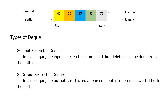Let's see the different types of Deque. There are basically two types: one is the input restricted queue and the other is the output restricted queue. In the input restricted queue, input is restricted at one end but deletion can be done from both ends. In the output restricted Deque, the output is restricted at one end but insertion is allowed at both ends.